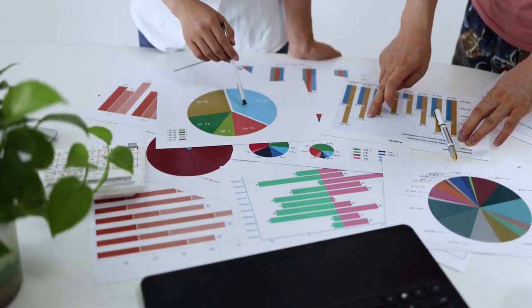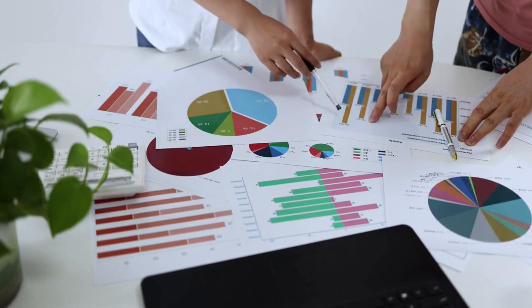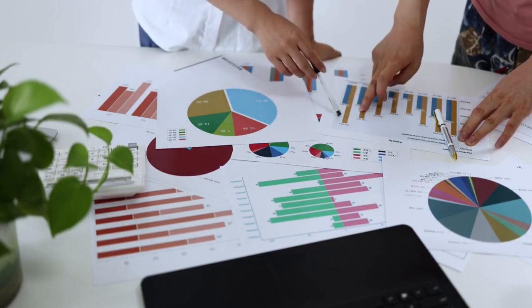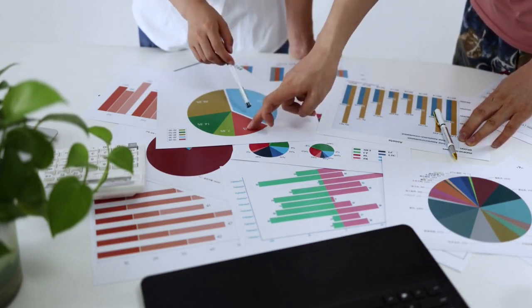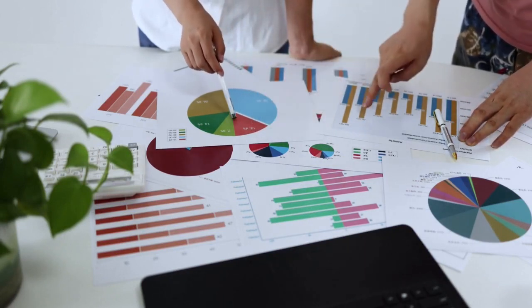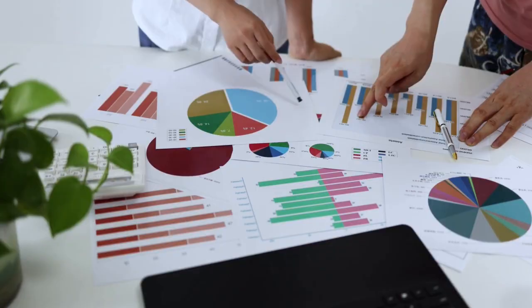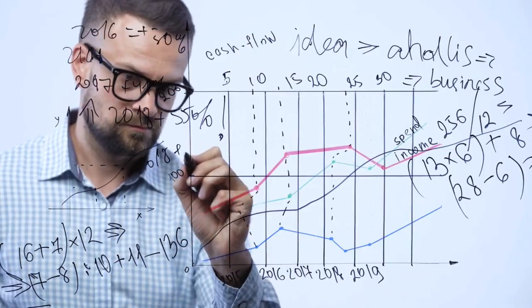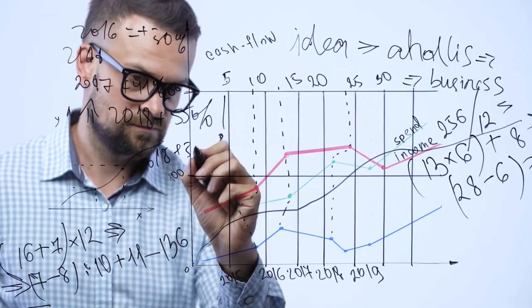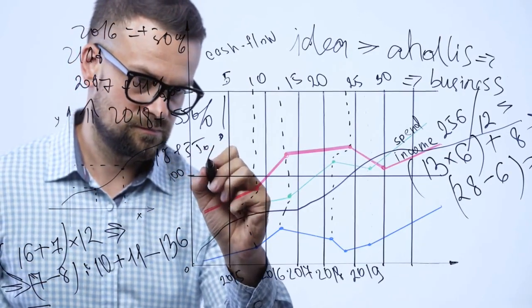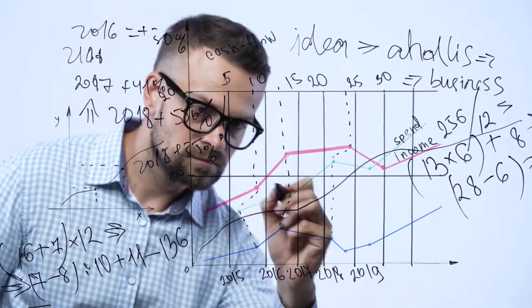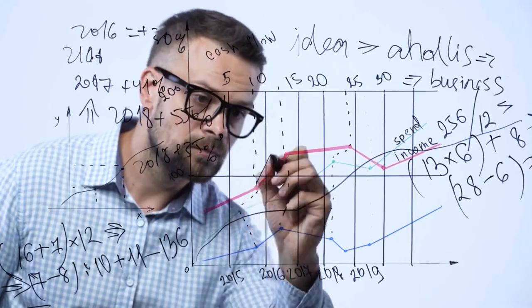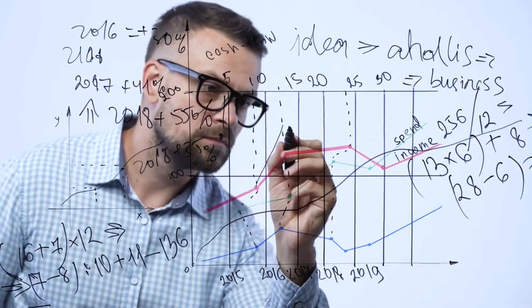Always disclose your affiliate relationships in your content to maintain transparency and trust with your audience. Regularly track your performance with analytics tools to understand what strategies are effective.